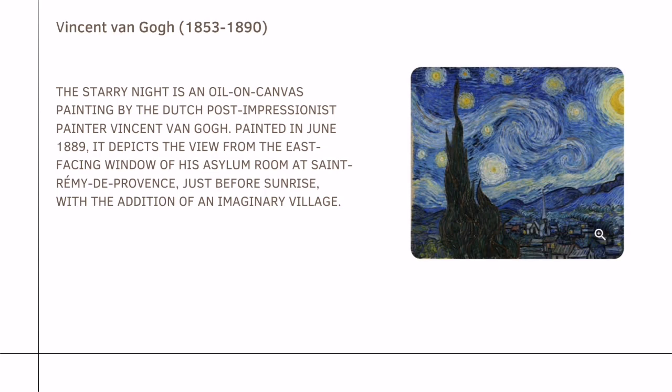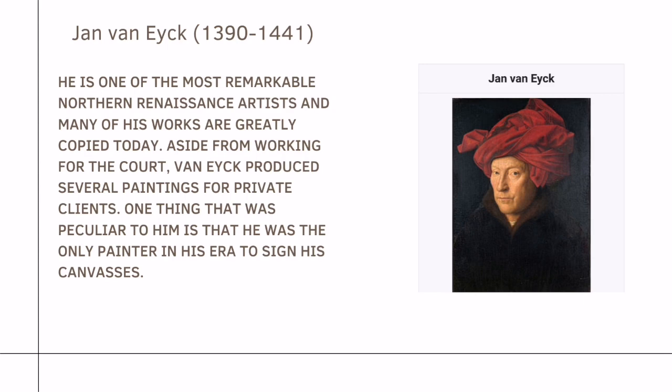Vincent van Gogh's famous work is The Starry Night, an oil-on-canvas painting by the Dutch post-Impressionist painter Vincent van Gogh. Painted in June 1889, it depicts the view from the east-facing window of his asylum room at Saint-Rémy-de-Provence just before sunrise, with the addition of an imaginary village.